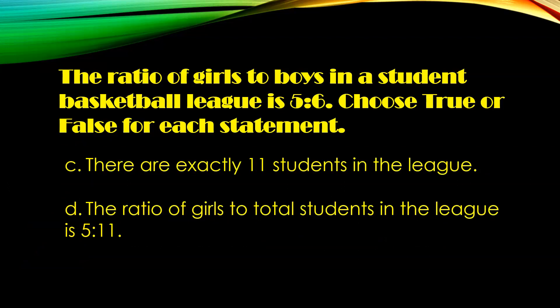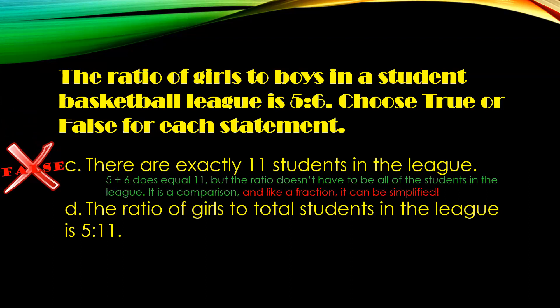Statement C: there are exactly 11 students in the league. False! 5 plus 6 does equal 11, but the ratio does not have to represent all the students in the league. It is a comparison, and just like a fraction, it can be simplified. Statement D: the ratio of girls to total students in the league is 5 to 11. This is true, because 5 plus 6 does equal 11, so 11 would be the total in comparison to the number of girls.